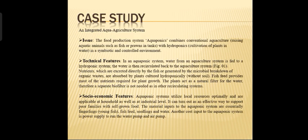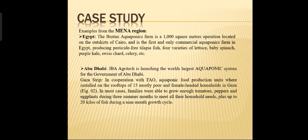Now we come to the case study part. The three basic aspects examined are issues, technical features, and socio-economic features. The first example is Egypt — a place named Boston Aquaponics Farm, enclosed in a 1,000 square meter area, located on the outskirts of Cairo. It is the first and only commercial aquaponics farm in Egypt, producing pesticide-free tilapia fish, four varieties of lettuce, and vegetables such as baby spinach, purple kale, Swiss chard, and celery.